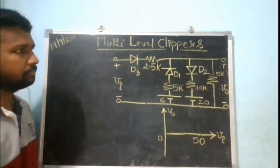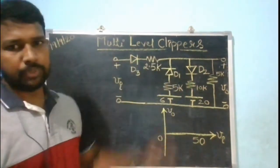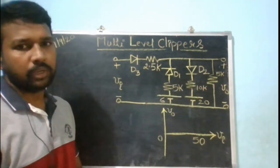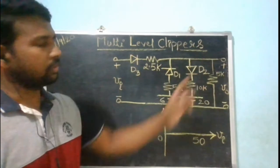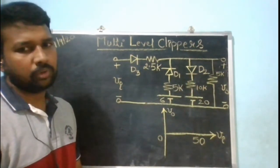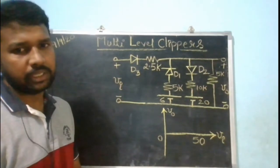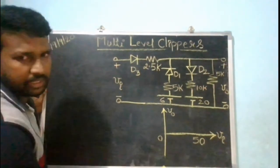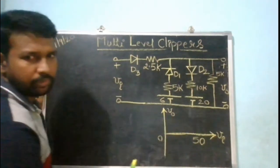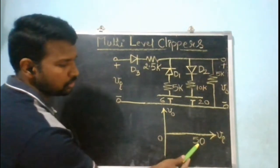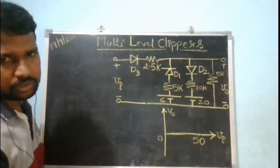Today's class we are going to discuss about multi-level clippers, where you could see more than two diodes. So far in our earlier class we discussed about two-level clippers where you could see a maximum of two diodes only, but here you could see more than two diodes — that can be extended even up to four diodes. Let us first start with a circuit having three diodes. The question is: plot the transfer characteristics between input voltage and output voltage, varying input voltage from zero volts to 50 volts.